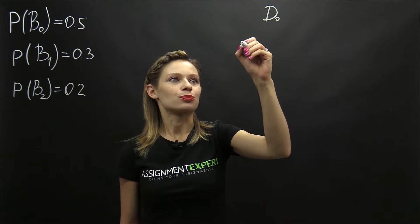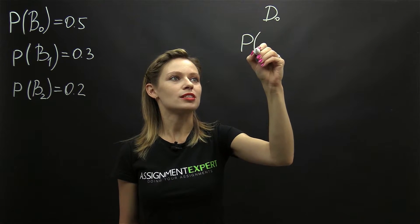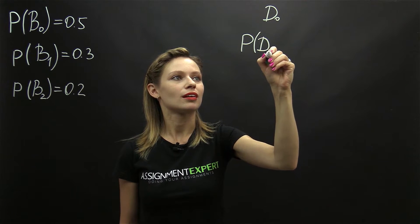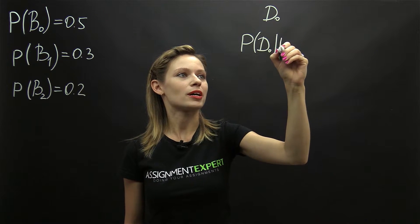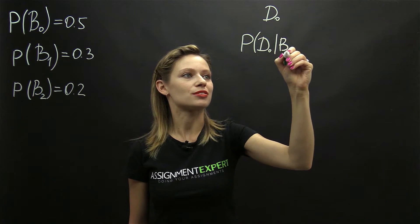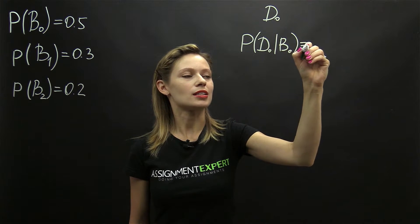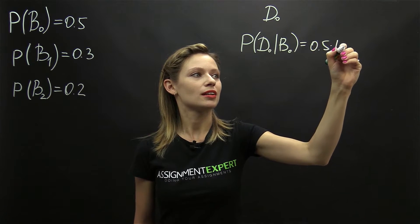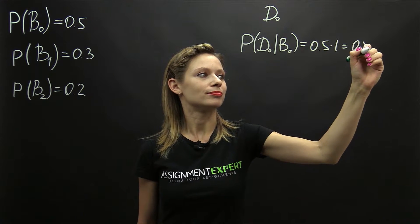The probability of D0 given that we have the batch with no defective components is equal to 0.5 times 1, which equals 0.5.